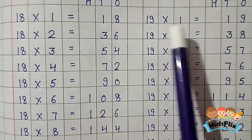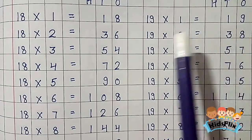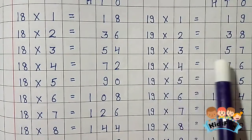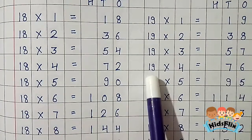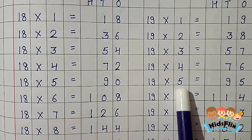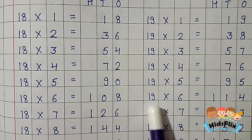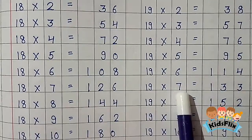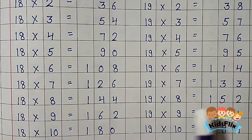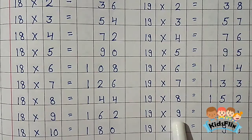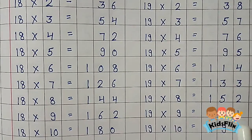19 1s are 19. 19 2s are 38. 19 3s are 57. 19 4s are 76. 19 5s are 95. 19 6s are 114. 19 7s are 133. 19 8s are 152. 19 9s are 171. 19 10s are 190.